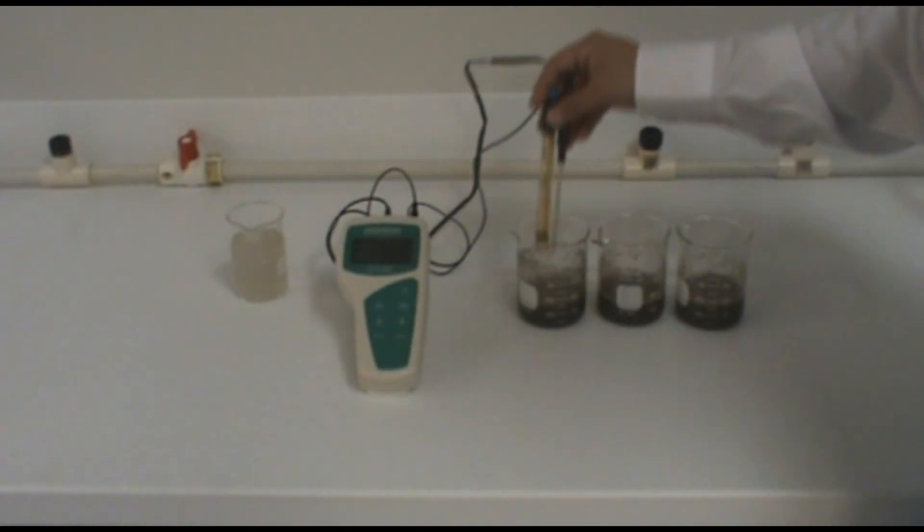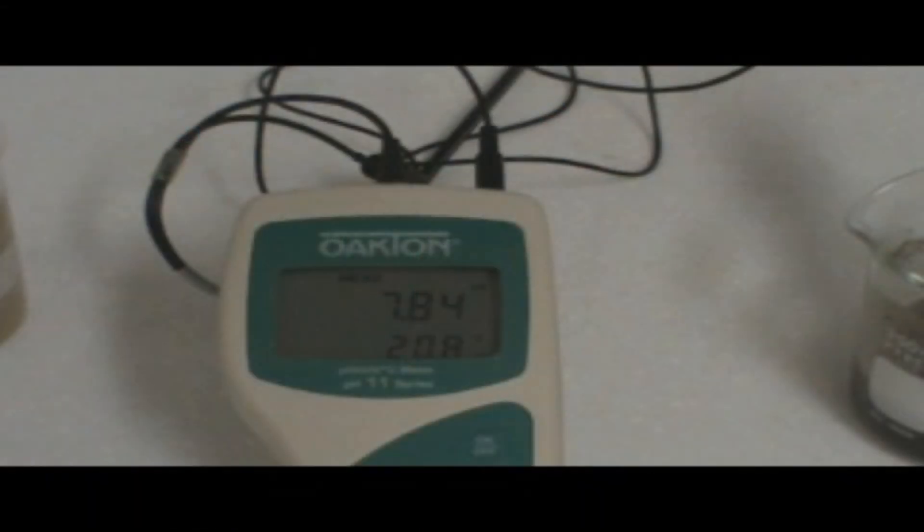After you have done this, you will then take the average of the three readings in order to get a value for the pH of your soil.